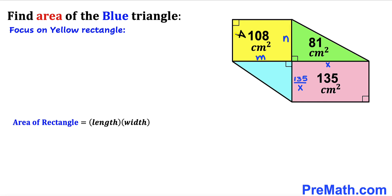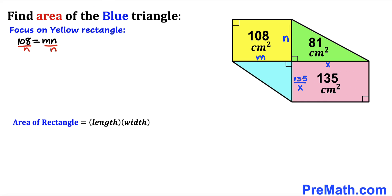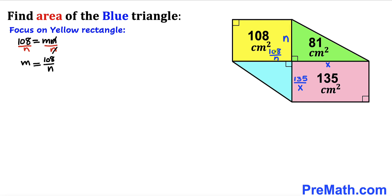Now focusing on the yellow rectangle, whose side lengths are m and n and whose area is 108. Filling in the area formula: 108 = m · n. Dividing both sides by n, we get m = 108/n. We replace m with 108/n, so this side length of the yellow rectangle is 108/n.